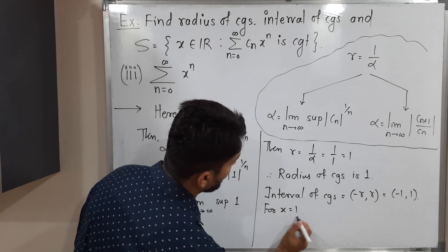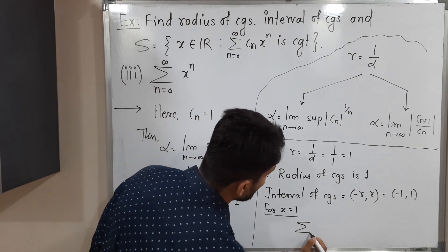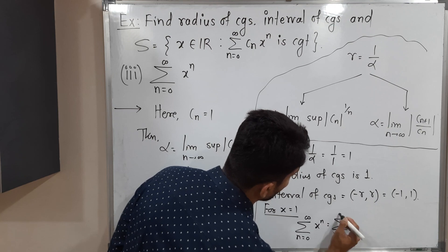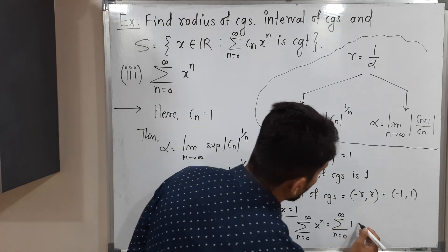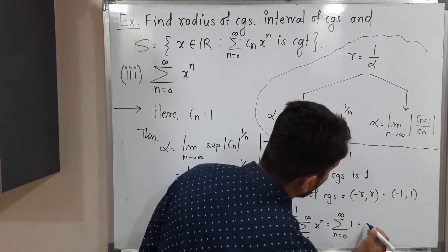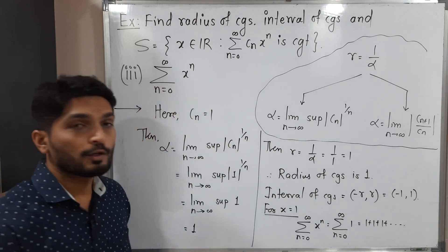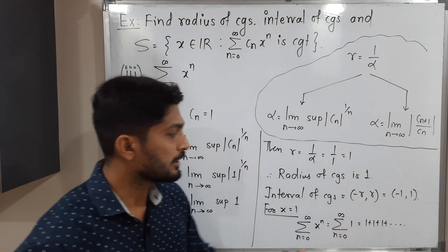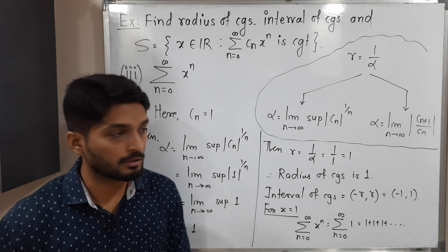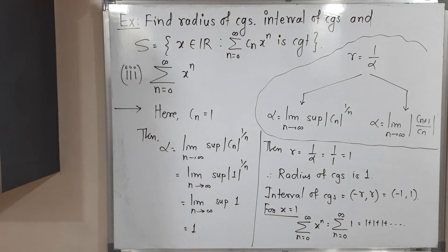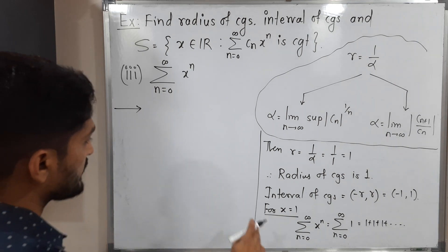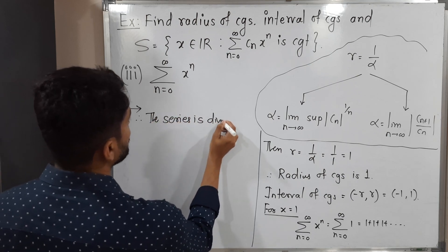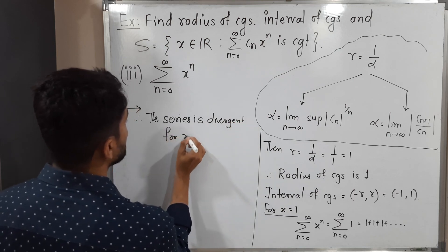For x equal to 1: summation n from 0 to infinity of x raised to n becomes summation of 1 raised to n, which is simply 1 itself. That means we are summing 1 plus 1 plus 1 infinitely many times, giving infinity. So the series is divergent for x equal to 1.